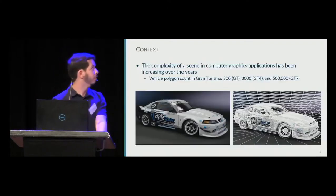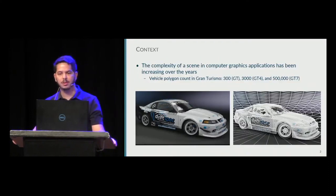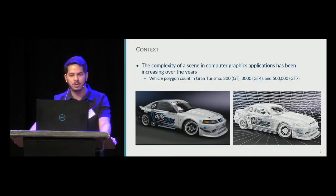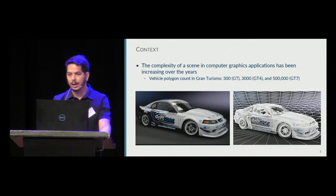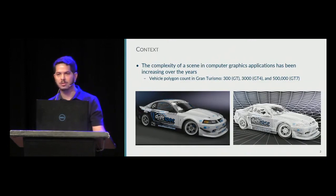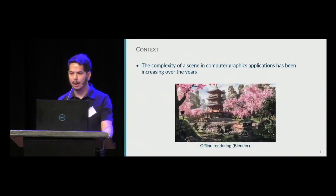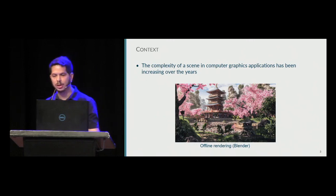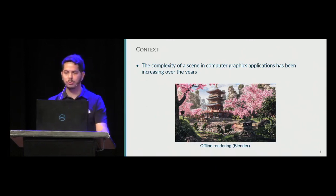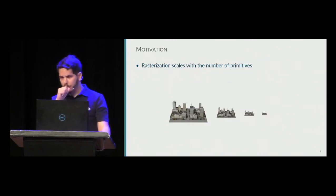The complexity of a scene in computer graphics applications has been increasing over the years. Just to give an idea, a car from Gran Turismo had 300 polygons in its first version and now has 500,000 in the current one. The quality of rendering has also increased, so rendering high-quality scenes like the one in the image would be quite challenging due to rendering time and memory consumption.